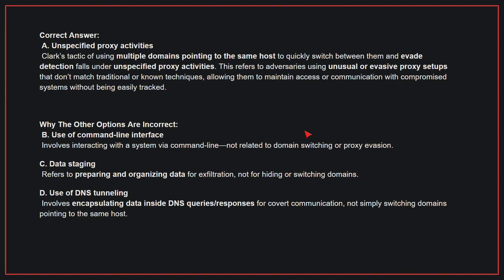Why the other options are incorrect: B, use of command line interface — this involves interacting with a system via a command line, not related to domain switching or proxy evasion. C, data staging — this refers to preparing and organizing data for exfiltration, not for hiding or switching domains. D, use of DNS tunneling — this involves encapsulating data inside DNS queries or responses for covert communication, not simply switching domains pointing to the same host.